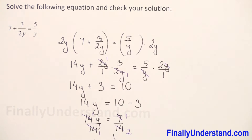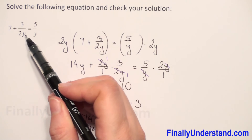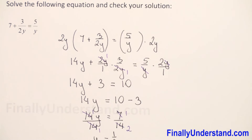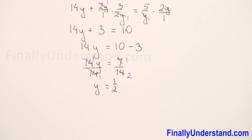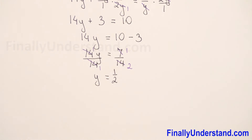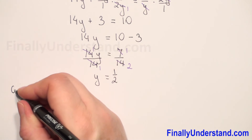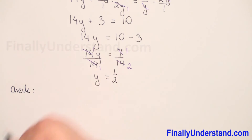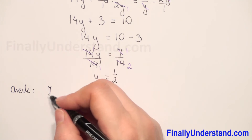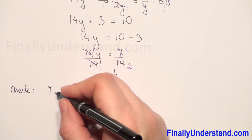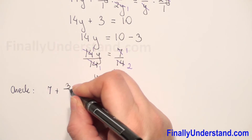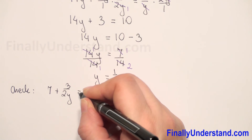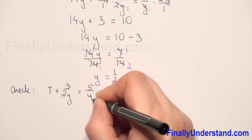Next we have to check if the solution is correct. It means we have to substitute y by 1 over 2 into our equation, and if the left side equals the right side, it means that y equals 1 half is the correct solution. So let's check — first we copy our original equation: 7 plus 3 over 2y is equal to 5 over y.